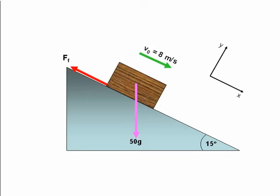Notice that I've drawn a set of coordinates on the screen there. I've chosen the x direction to be parallel to the slope and the y direction to be perpendicular to the slope. I'm now going to resolve the weight vector into two components, one along the slope and one perpendicular to the slope.